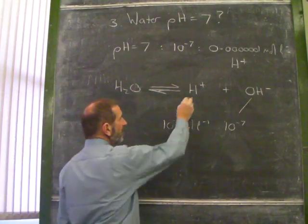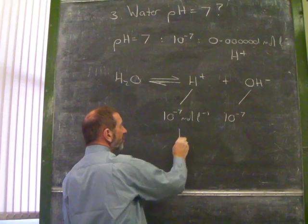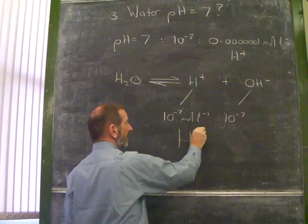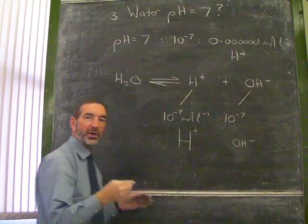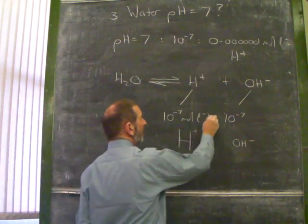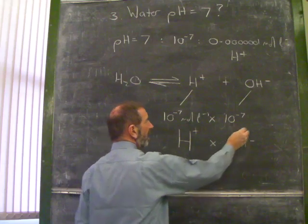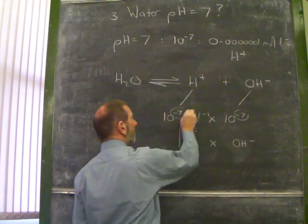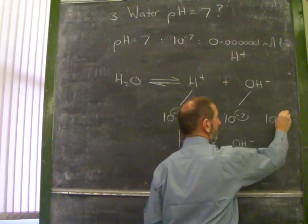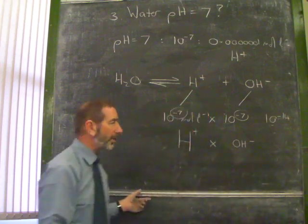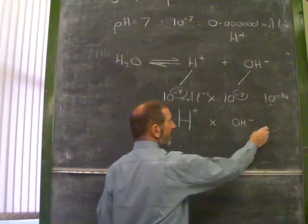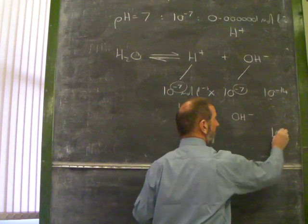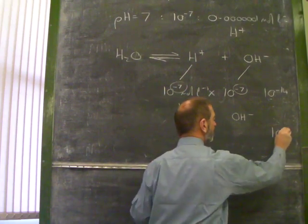Now if this was to become acidic, if the hydrogen ions were to increase, we'd find that this was to correspondingly decrease. We'd find there's a sort of theme to this, a constant, and that is that when you multiply these together, it always comes to 10 to negative 14. It's called the ionic product of water. So no matter how big this is, or how small this is, it will always come to 10 to negative 14.